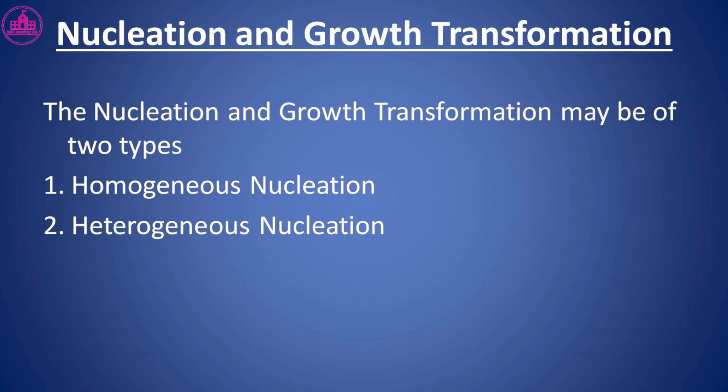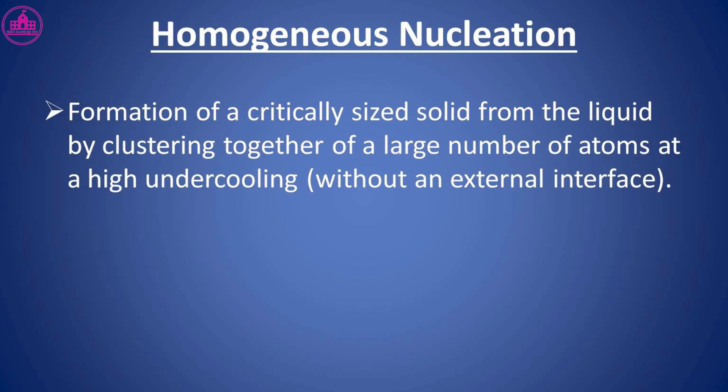The nucleation and growth transformation may be of two types: (1) Homogeneous nucleation and (2) Heterogeneous nucleation. Homogeneous nucleation is the formation of a critically sized solid from the liquid by clustering together of a large number of atoms at a high undercooling.